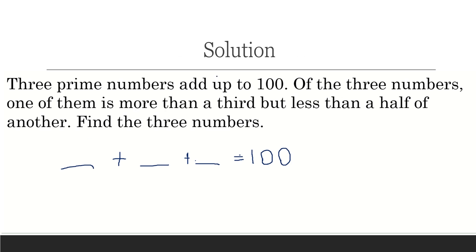Bonus problem: out of three prime numbers that sum to 100, one must be an even number, and the only even prime number is 2. So one number is 2. The remaining two numbers must sum to 98. By trial and error, 31 + 67 = 98, and 98 + 2 = 100. So the three prime numbers are 2, 31, and 67.